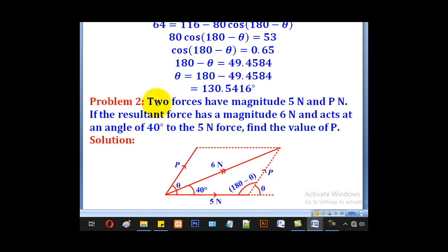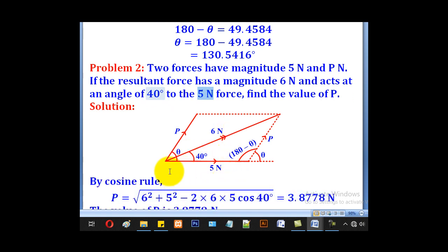We shall now go to another problem. Two forces have magnitude 5 and P newtons. If the resultant force has a magnitude 6 and acts at an angle 40 degrees to the 5 newton force, find the value of P. So since they have given us the angle to the 5 newton force, it is better to get this 5 newton force be on the horizontal. So this is the 5 newton force. This is the P. Now this is the angle between the two forces.